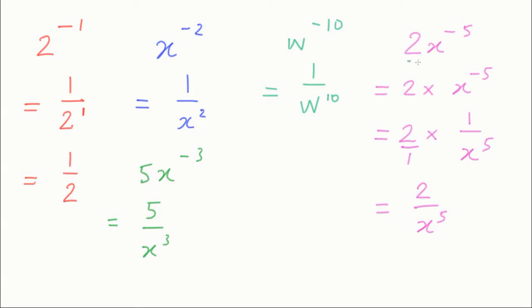And even if you have a fraction like a half x to the minus 4, that would be, just showing the steps this time, a half times 1 over x to the 4. And then we end up with 1 on the top and 2x to the power 4 on the bottom like that.